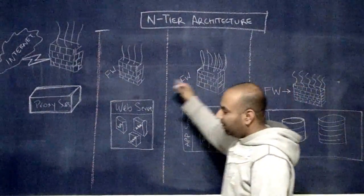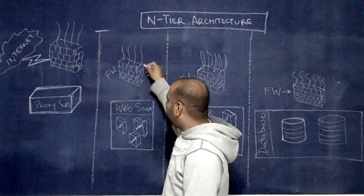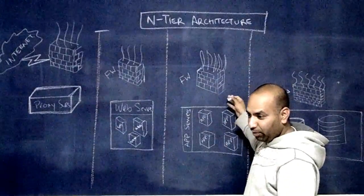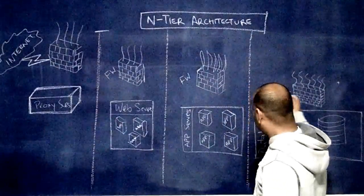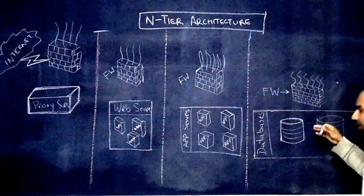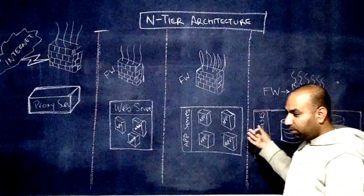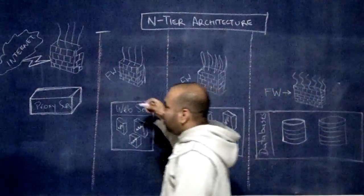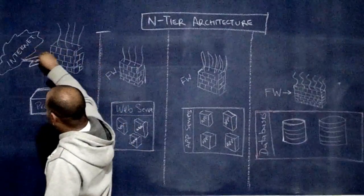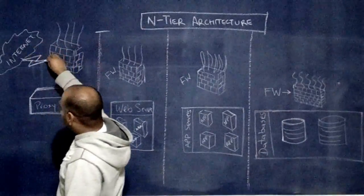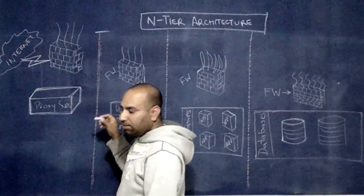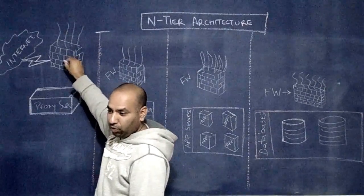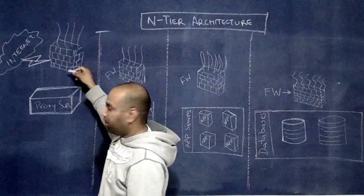Each one of these tiers is secured by firewalls — sometimes multiple firewalls — and each one of them has rules about who is allowed to get where. So a user, Joe, comes in requesting a web page. It goes through a firewall that decides whether to allow Joe to request the web page.